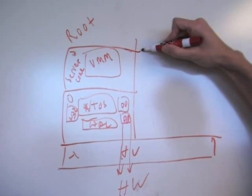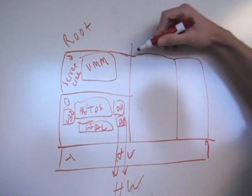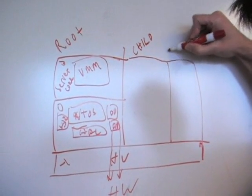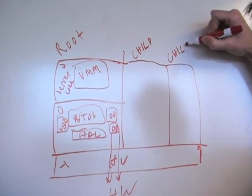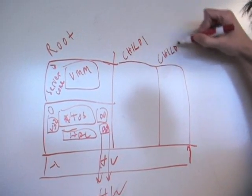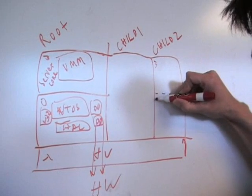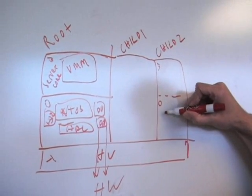And then you've got other partitions. And you come across various names for these other partitions. I'll call them child partitions here, because they're really, or they're also guest partitions. Child one and child two.